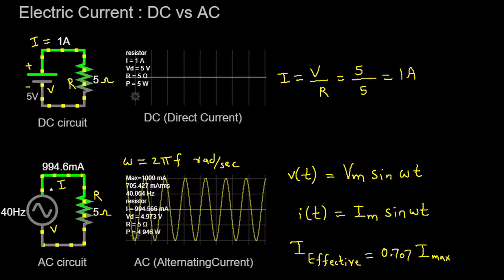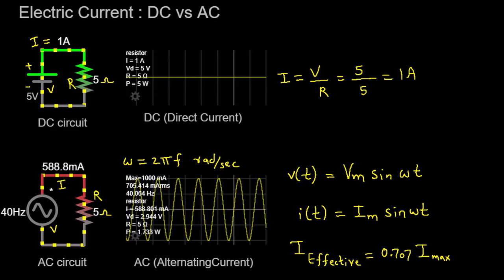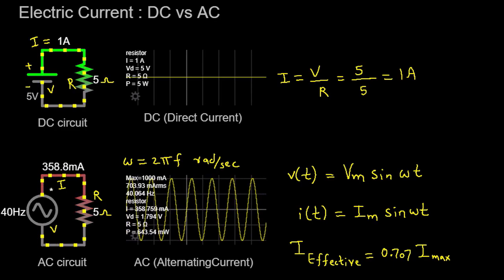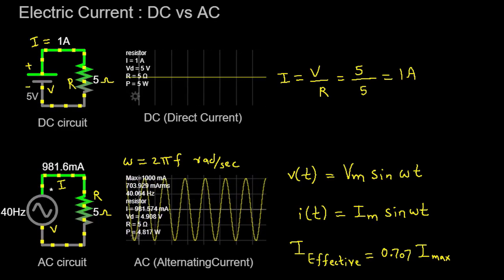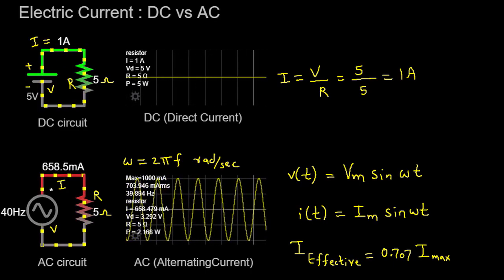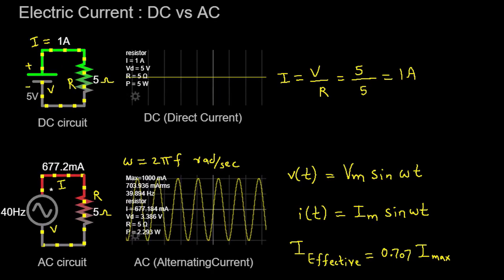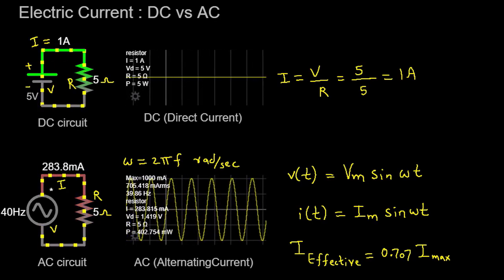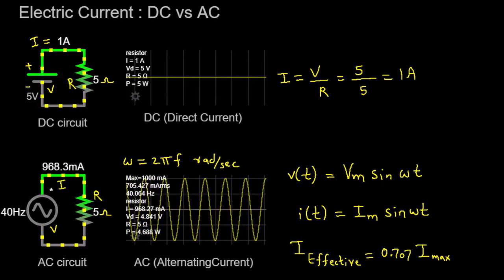And there you have it. We've delved into the differences between direct current (DC) and alternating current (AC). We've witnessed how DC current maintains a constant flow in one direction, while AC current oscillates back and forth. We've explored Ohm's law in the context of DC circuits and introduced the concepts of angular frequency, voltage, and current in AC circuits. By comprehending these fundamental principles, we gain a deeper understanding of how electricity behaves in various applications, ranging from small electronic devices to large-scale power transmission systems. Thank you for joining me on this educational adventure.